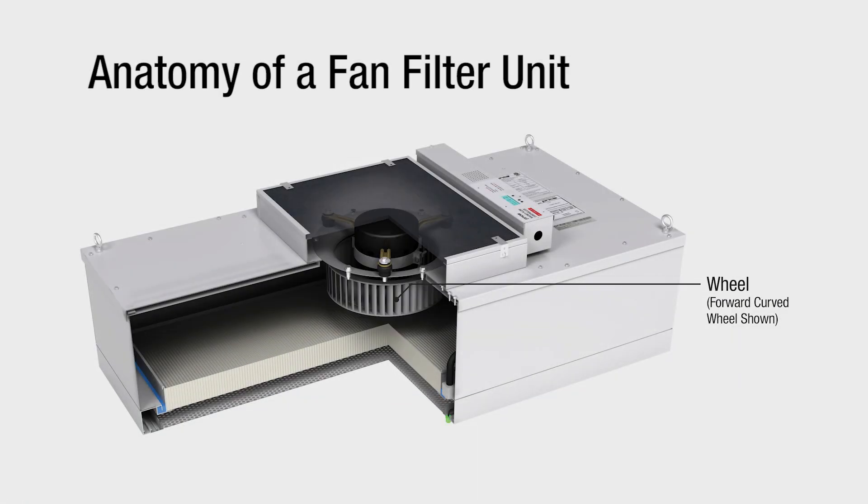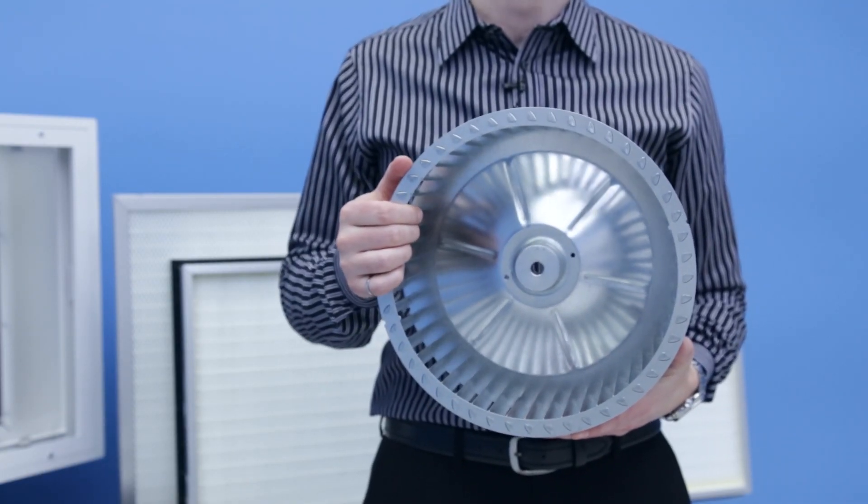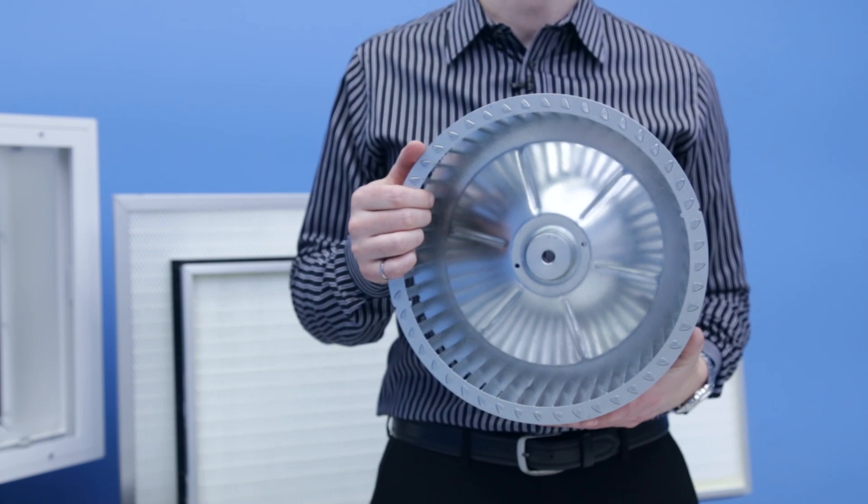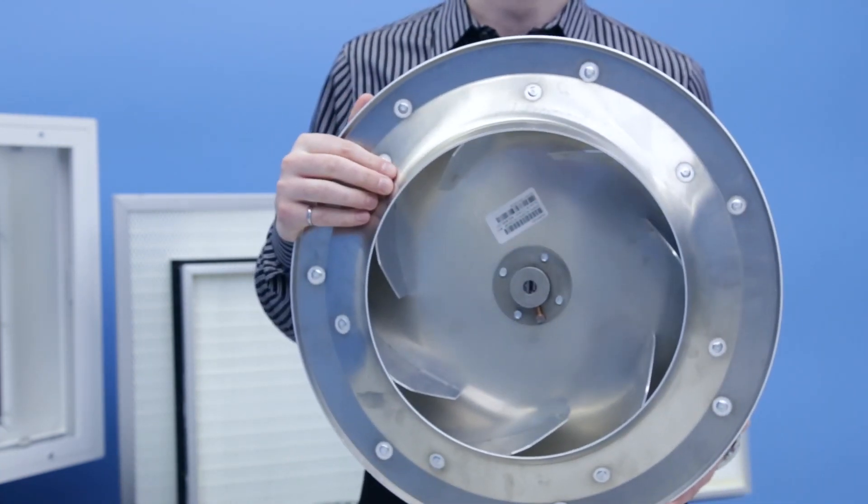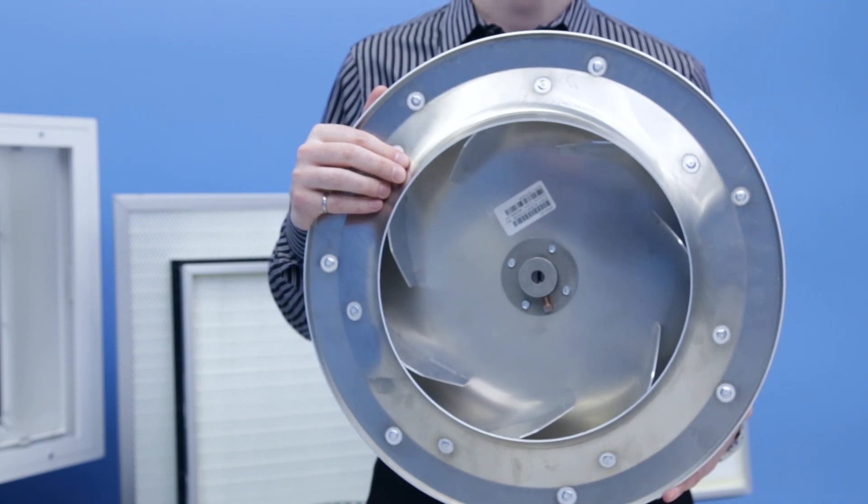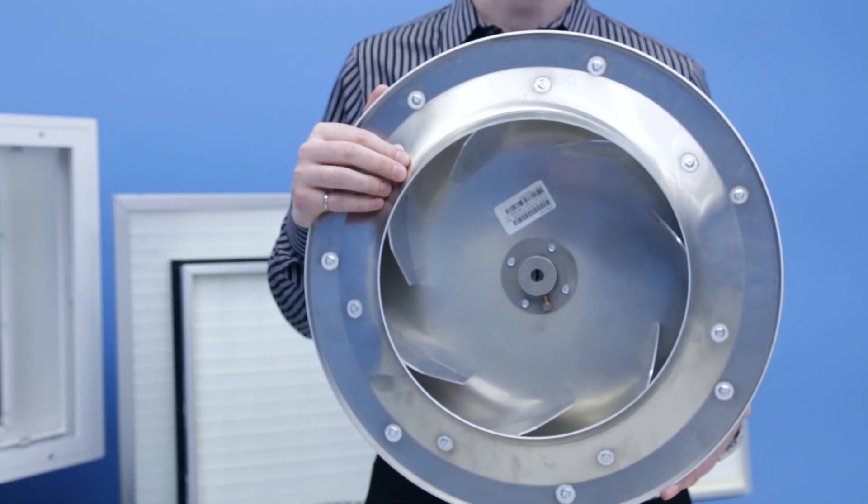In addition to motor options, there are also two wheel options. Forward curved wheels are the standard option and are compatible with the EC motor and constant flow program. Backward curved wheels, although not compatible with the constant flow motor program, are a more energy efficient option.